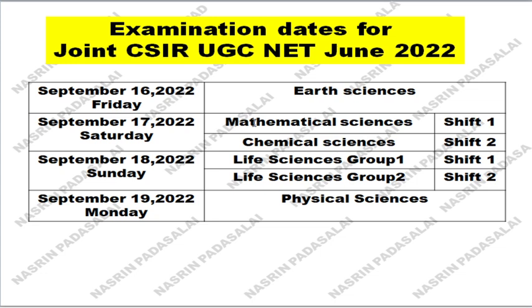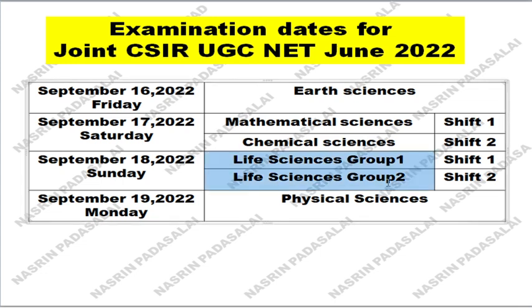Mathematical Sciences and Chemical Sciences will be writing the exam on September 17th. With regard to Life Sciences, students will be writing in two groups because the total number applying for Life Sciences ranges from 1 lakh to 1.5 lakhs. For these two groups, separate question papers will be provided.